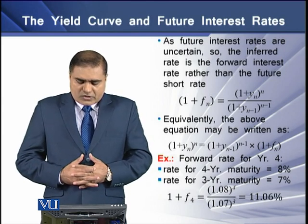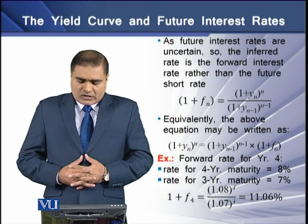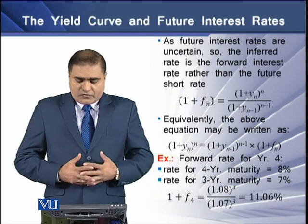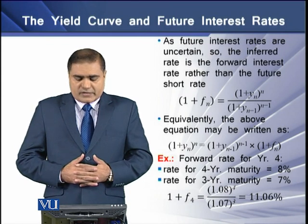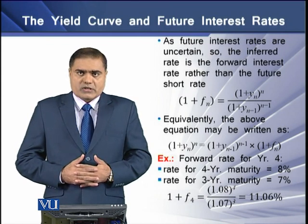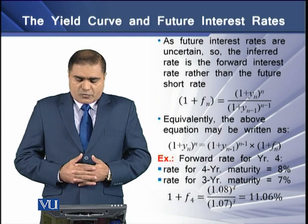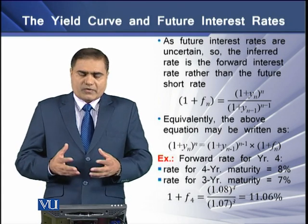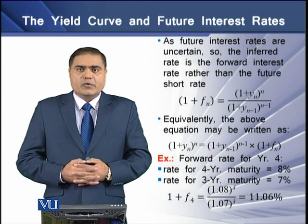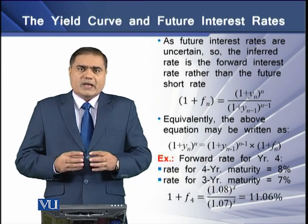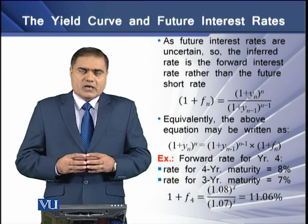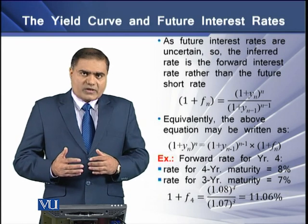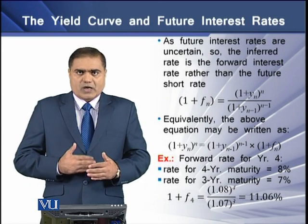For example, to compute the forward rate for year 4: if the spot rate for four-year maturity is 8% and the spot rate for three-year maturity is 7%, plugging these values into the forward rate formula gives a forward rate of 11.06% for year 4, available right now.